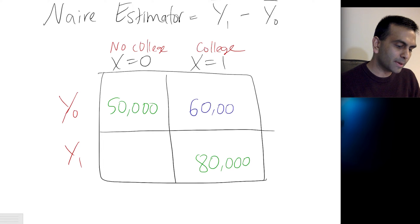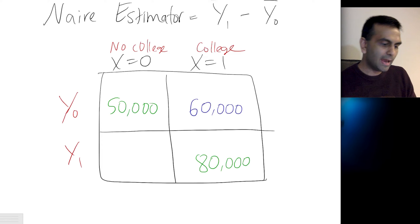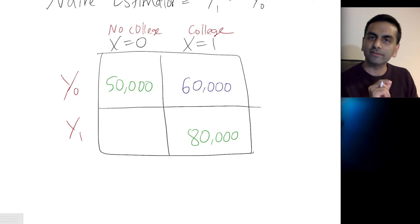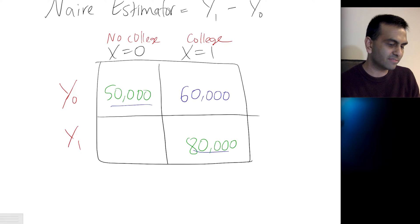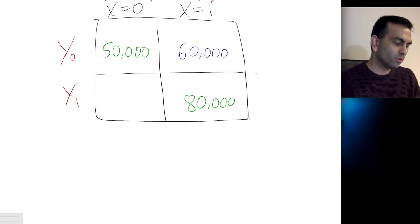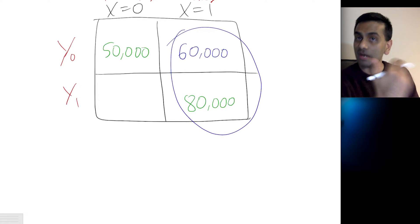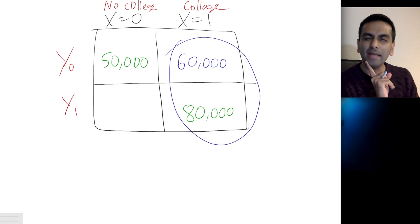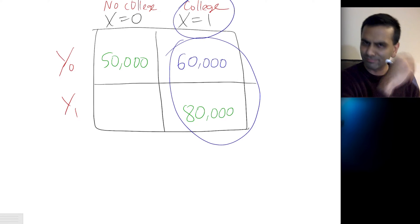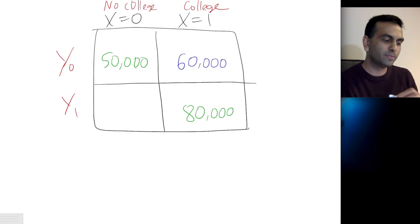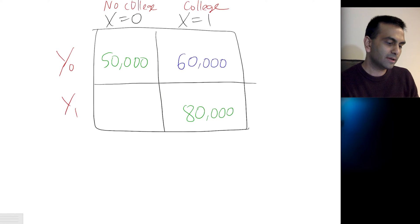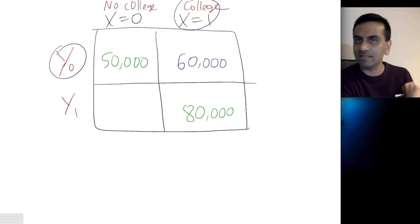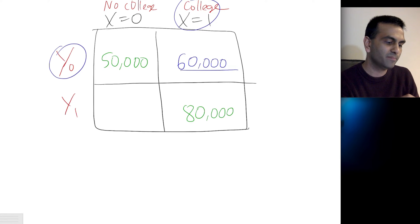Let's say we peek behind the curtain and somehow know that the counterfactual for college-goers — their income without a degree — is $60,000. Now the actual Y1 minus Y0 for this group is $20,000, not $30,000. That's the actual treatment effect — but not for everybody, just for the group of people who chose to go to college. Going to college increased their income by $20,000, and that's causal because we're comparing that same group with and without college.